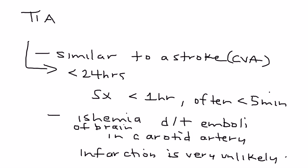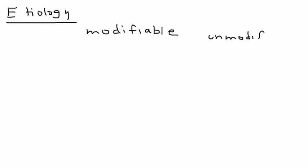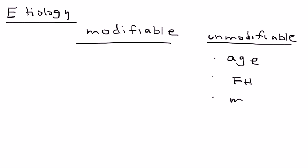What are some of the causes? Etiology of TIA is broken up into two categories: modifiable and unmodifiable. The unmodifiable list is shorter. There's age, family history, and the male gender tend to be risk factors.